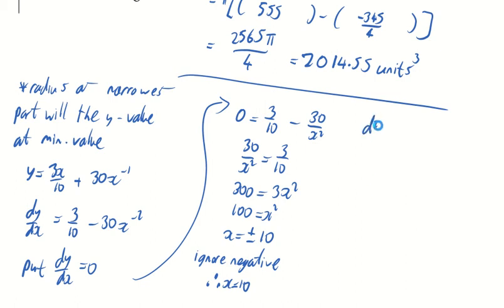So to prove the minimum, you need to find your d2y by dx squared. So differentiate your dy by dx again. You're just going to get plus 60, I should say, x to minus 3. And just say, when x equals 10,